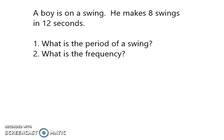So we're talking about period and frequency, and period is the time it takes per one repetitive motion. In this case, a swing would be a repetitive motion. And we have a boy on a swing. He makes eight swings in 12 seconds.